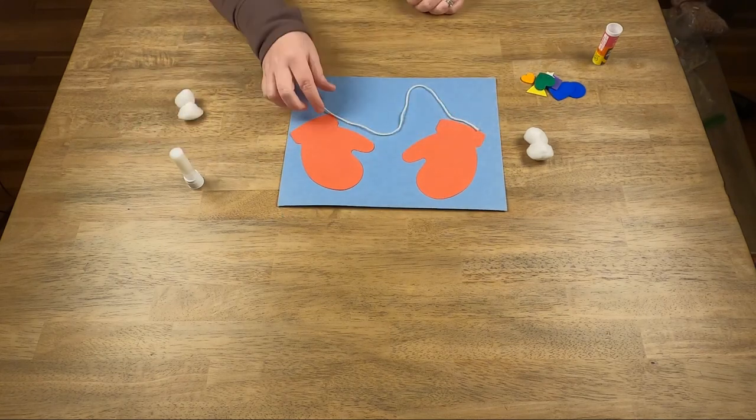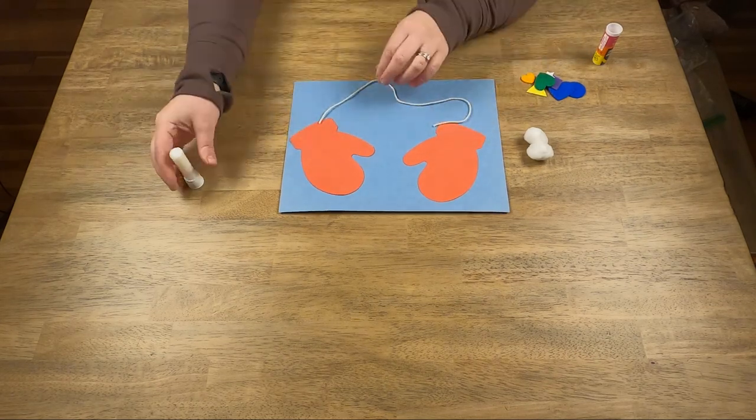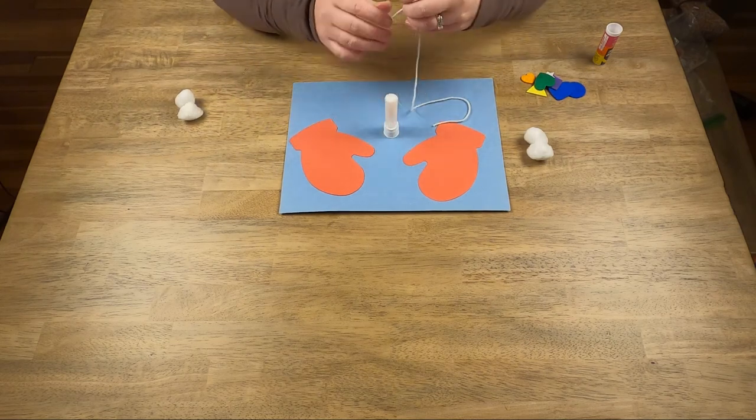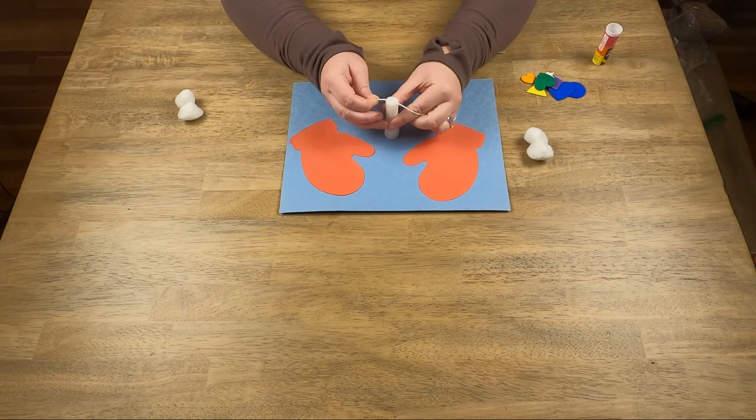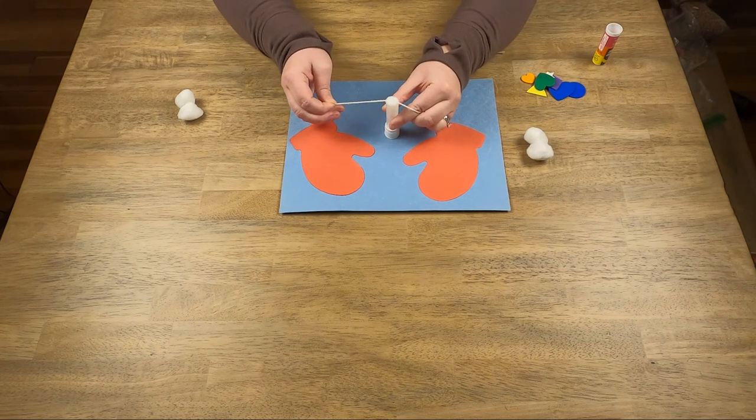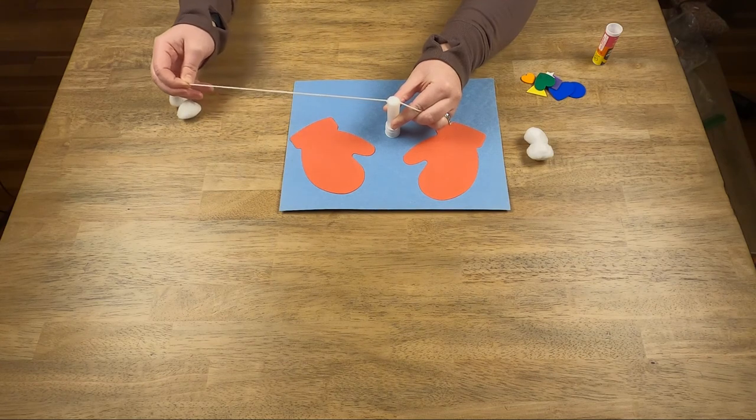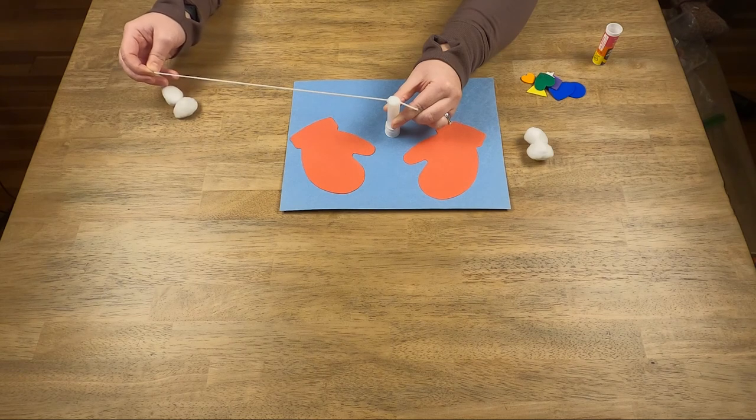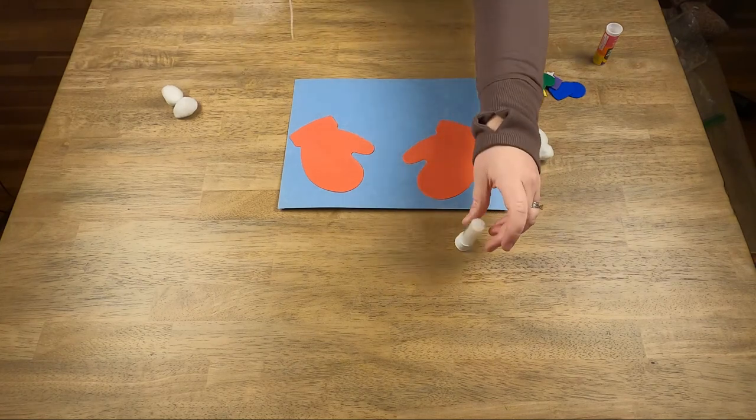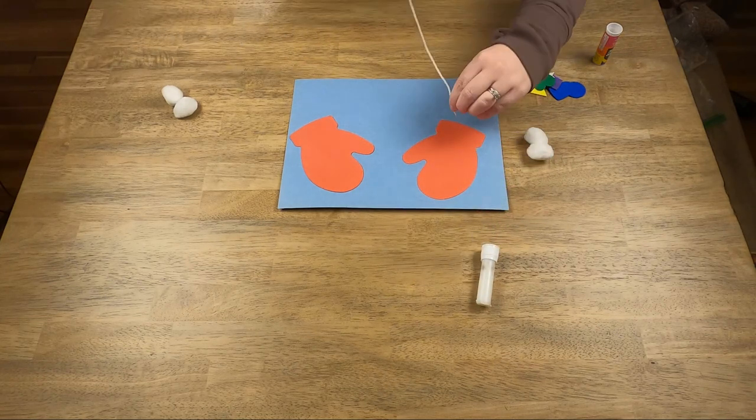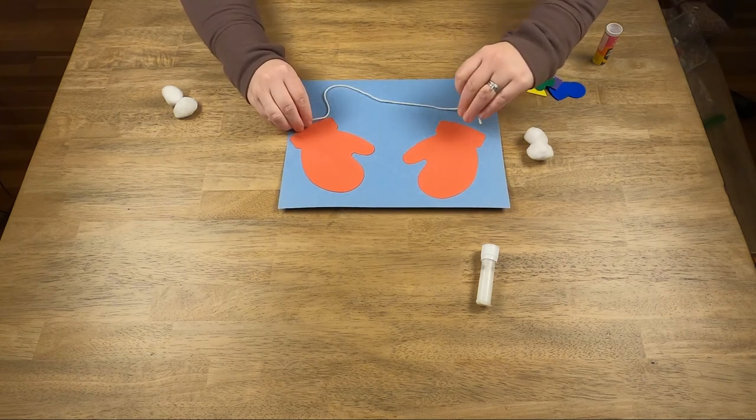The best way to glue down this string that connects our mittens is to take the glue stick, put it somewhere flat or have somebody help you hold it, then take the string and run it all the way through the glue. So the string is gonna be sticky, just be careful. Once it's covered, place it on one end, maybe in the middle, and then place it on the other end.